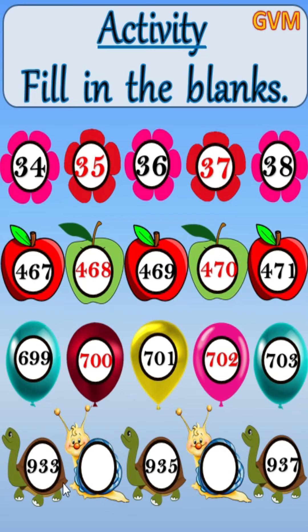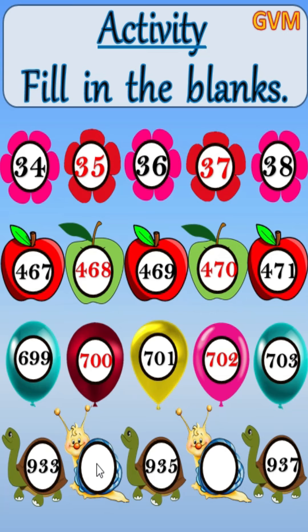The numbers given are 933, 935, and 937. These numbers are given and we will find the missing numbers. Between 933 and 935 the missing number is 934. Between 935 and 937 the missing number is 936. This is how you solve this type of fill in the blanks.